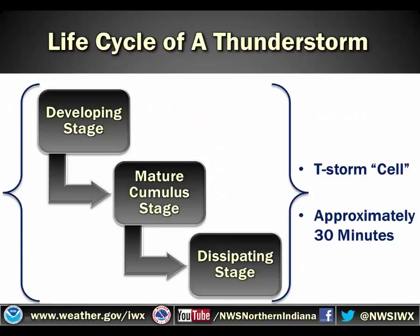The life cycle of a thunderstorm has three stages. First there's the developing stage, the mature cumulus stage, and then the dissipating stage. The total life cycle of this storm cell is about 30 minutes or so, but that can continue to regenerate throughout the entire process, which we'll talk about later.